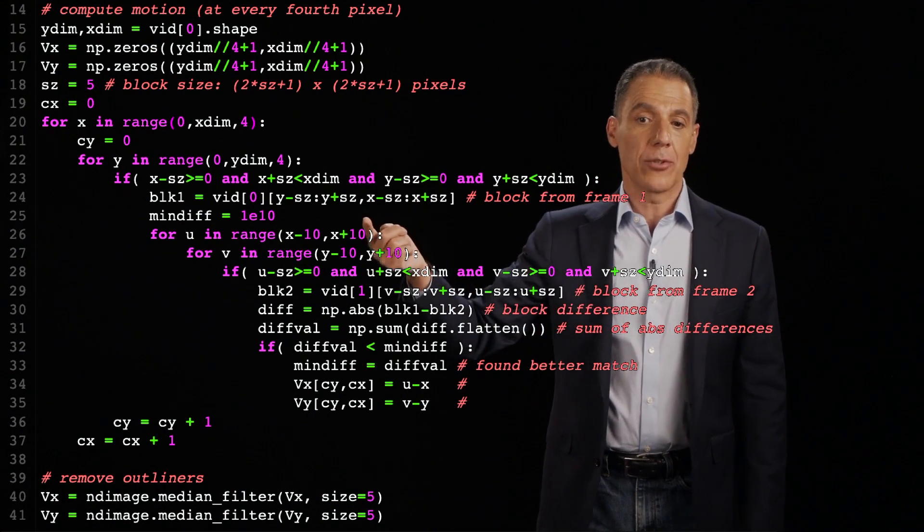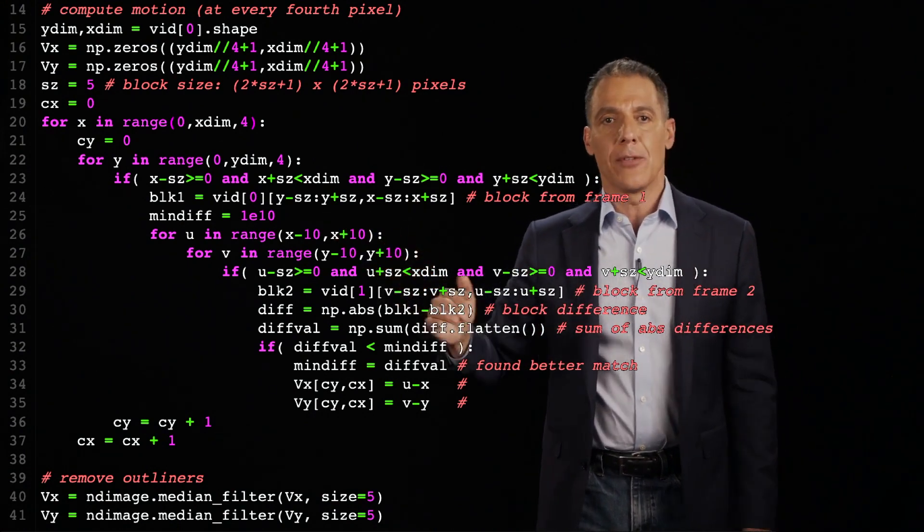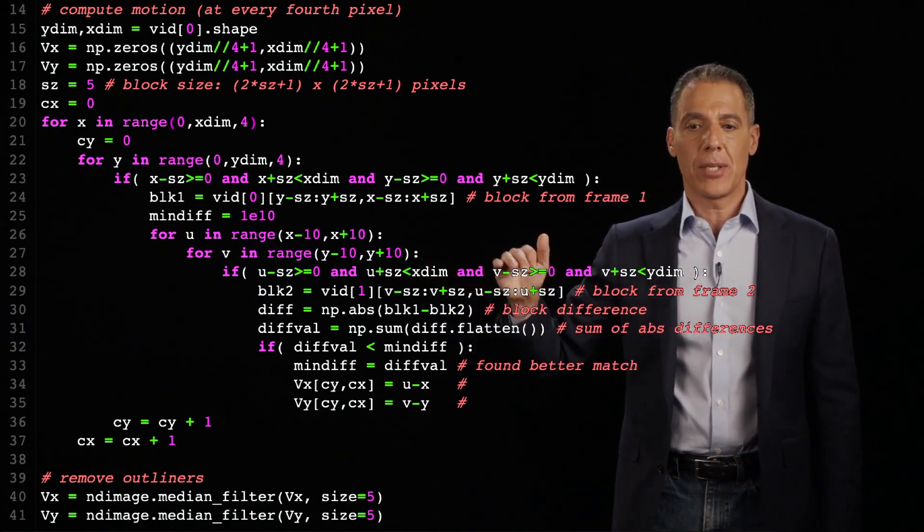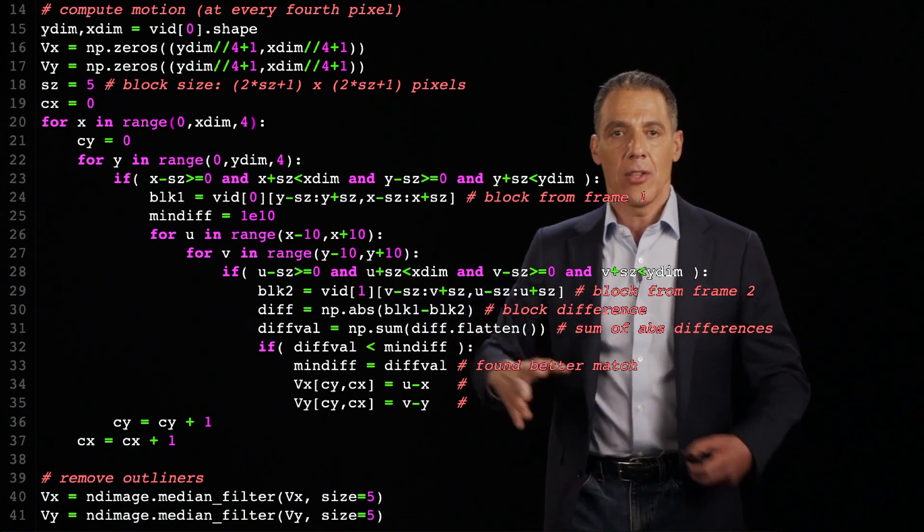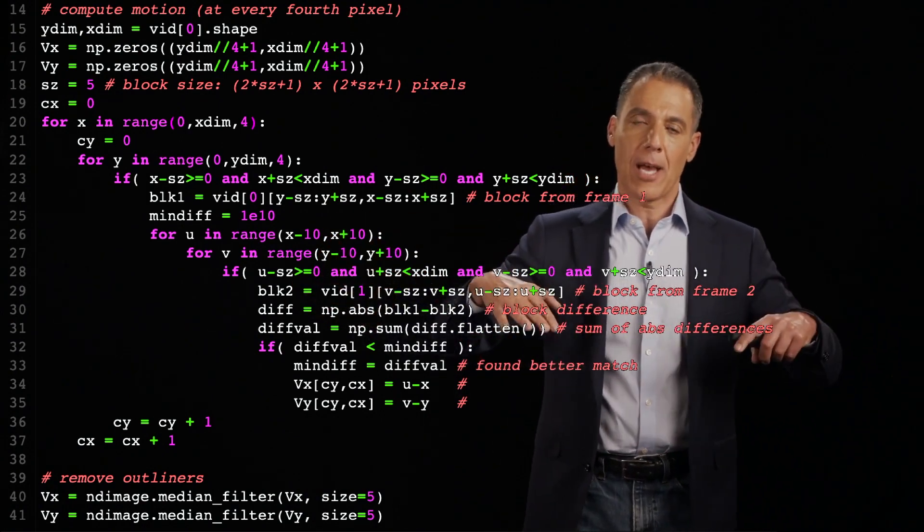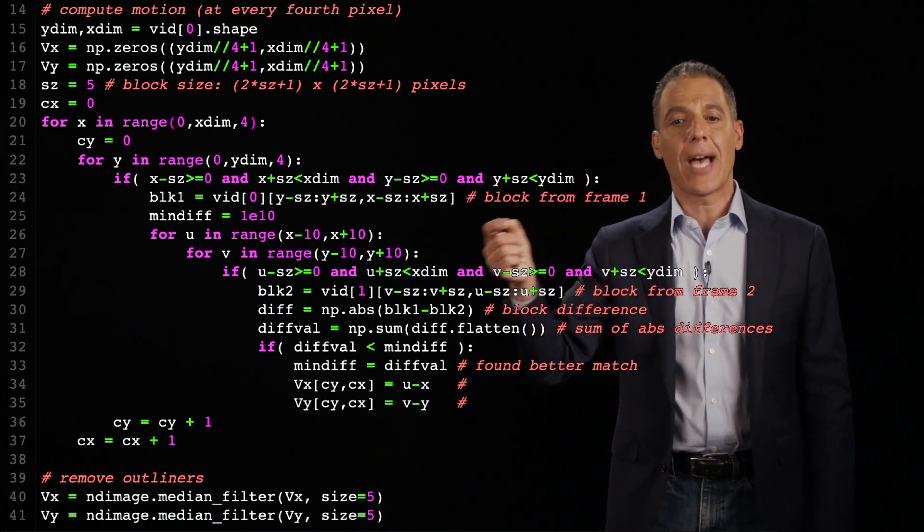So baked into here is an assumption that something doesn't move more than 10 pixels. If you're worried about something that moves more than 10 pixels, well, just increase that bound there. Again, there's some tension. The more you increase that, the slower the computation. But if you make it too small, you may miss something that moves outside of that bound.